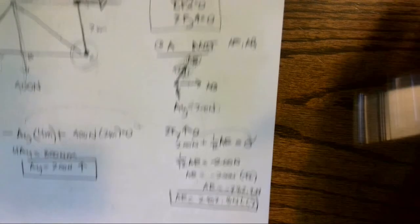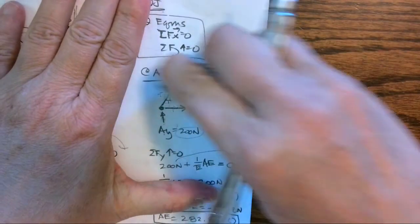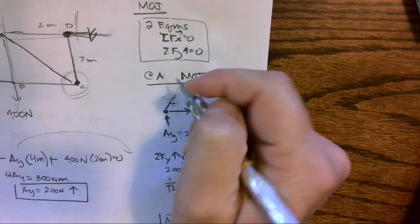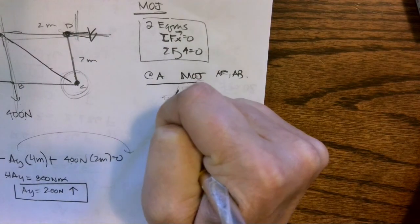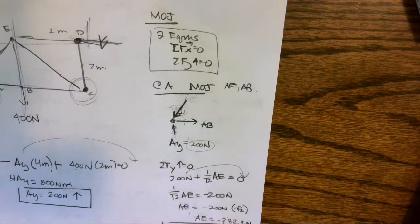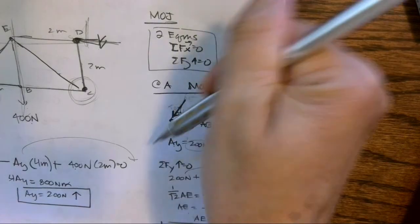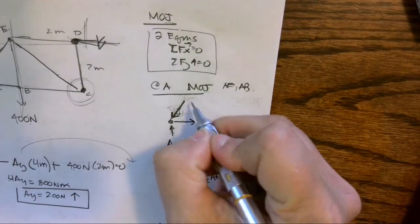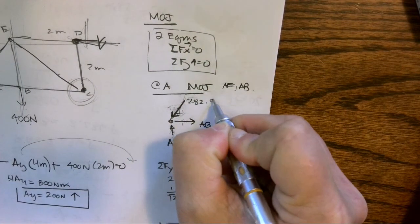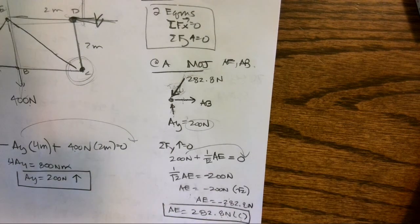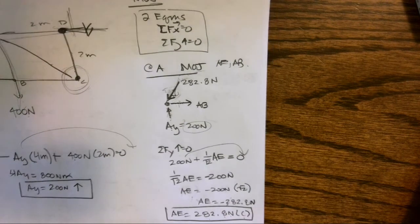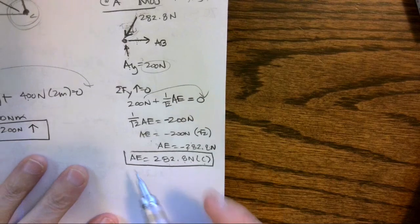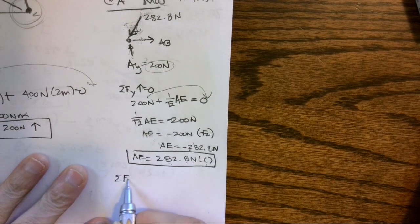So I'm kind of visual—I like to change my things because I know it's actually acting in compression. I'm going to draw it as a compression, pushing on that joint, and I'm going to put the value 282.8 Newtons. So now when I look at this, I can very quickly see that I can go back and I can now sum forces in the X direction.